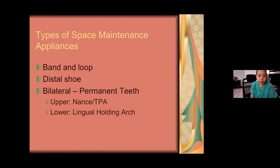There are different types of space maintainers used in dentistry. The three types I'll discuss are: the band and loop and the distal shoe, both considered unilateral — only on one side of the mouth — and the bilateral, for either the upper or lower arch. Bilateral space maintainers must be abutted on permanent teeth. If you don't have permanent teeth, you can't use a bilateral spacer.